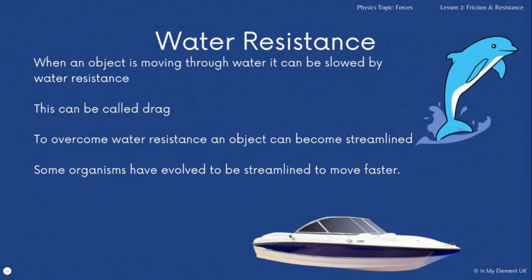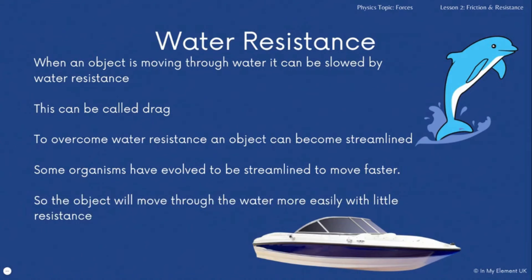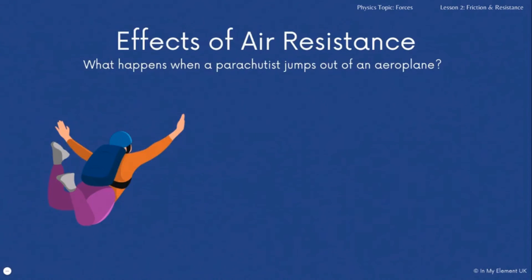Certain organisms, such as the dolphin, have evolved over time to become more streamlined to move through water faster, reducing the amount of resistance. When talking about this, you need to understand the effects of air resistance. One example you need to know is what happens when a parachute jump takes place — you need to know what is going on at different points.